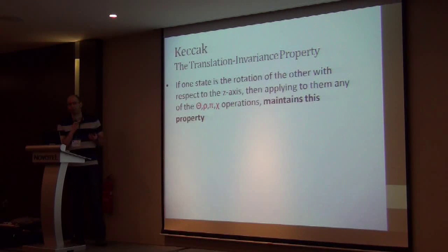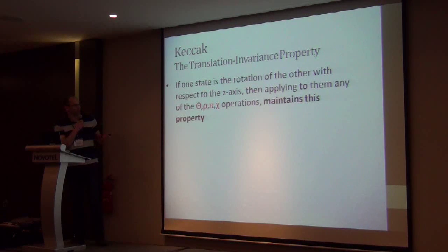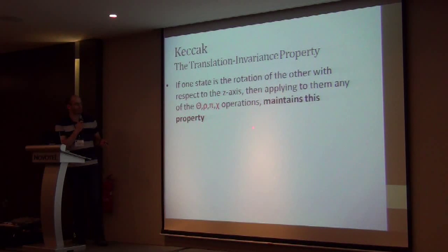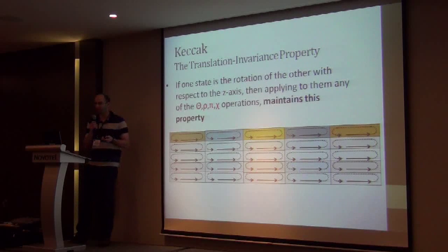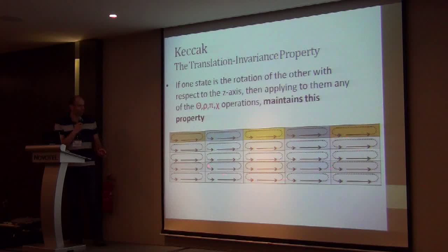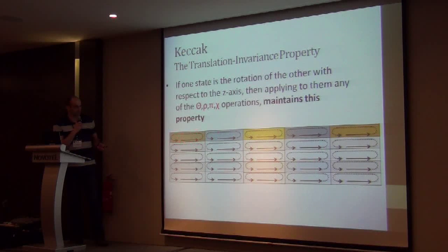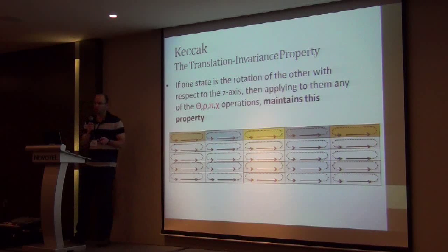What does it mean for a mapping to be translation invariant in the Z-axis direction? It means that if one state is a rotation of another state with respect to the Z-axis, then applying any of the first four Keccak mappings maintains that relationship. To rotate a state in the Z direction, we rotate each lane — each 64-bit cell of the 5-by-5 matrix — by the same number of bits i.